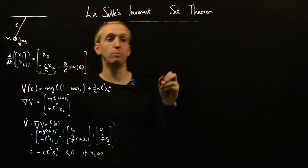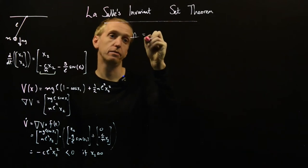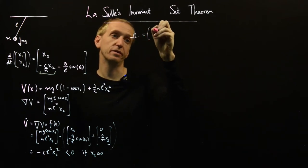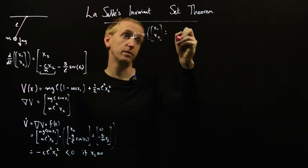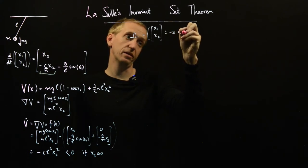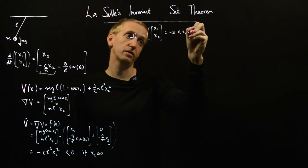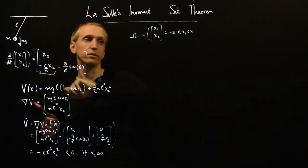If x2 is not equal to zero. And this was the problem. If you remember before, our domain omega was the set of points in our state space x1 and x2, such that minus pi is less than x1 is less than pi, the points corresponding to this set of angles here.